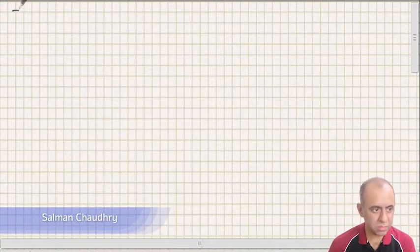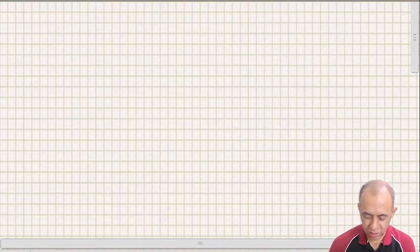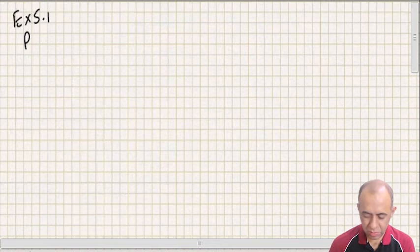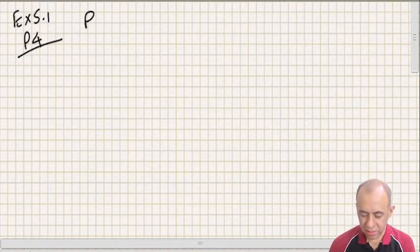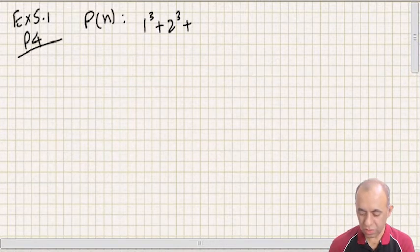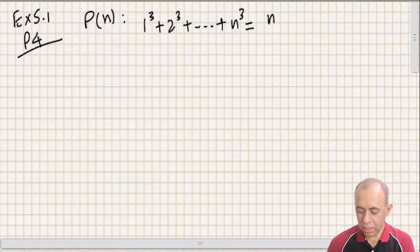This is Exercise 5.1, Problem number 4. The problem statement says that there is a theorem P(n) that 1³ + 2³ + ... + n³ equals [n(n+1)/2]².